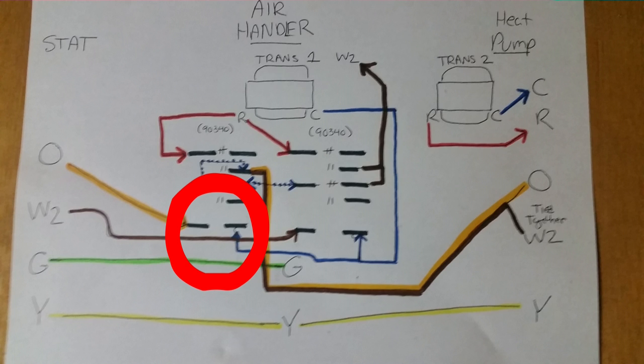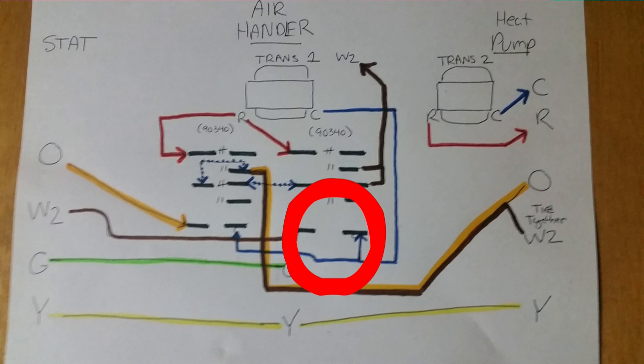The coil on the left is energized by O and common. The coil on the right is energized by W2 and common. And sometimes that will be W2 slash auxiliary. You can mate the W2 and emergency heat wires together on the thermostat just like we used to do in the past. That's not a problem.